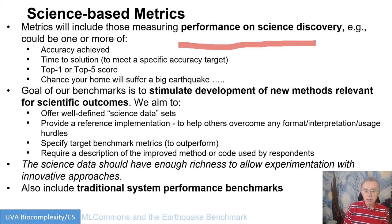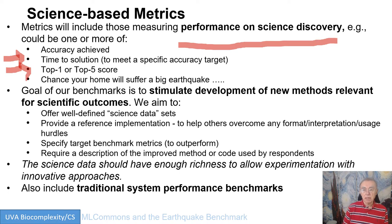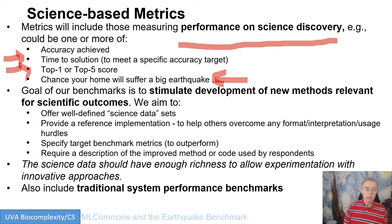We're going to have metrics which include science and performance on science discovery, such as the accuracy achieved in the case of earthquakes — how accurate are you on predicting the occurrence of a future earthquake? We want to do the traditional metrics: time to solution. You have a given accuracy — how long does it take to run on a particular computer? In the case of images, there are things like top-1 and top-5 measuring how near you get to the possible classification. For earthquakes, the real thing is you want to know what the chance of a big earthquake is in a certain region in the next several years, because big earthquakes are fortunately sufficiently uncommon. You don't really want to predict them in the next two weeks.